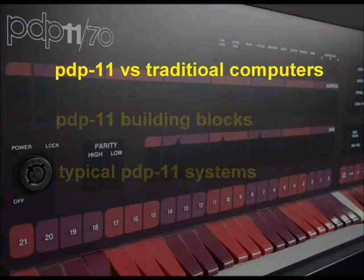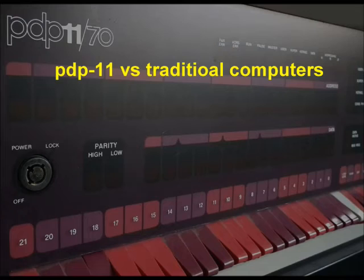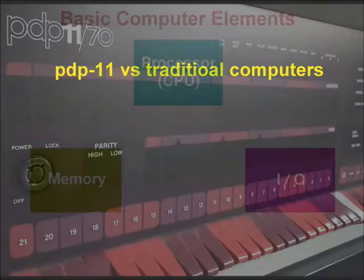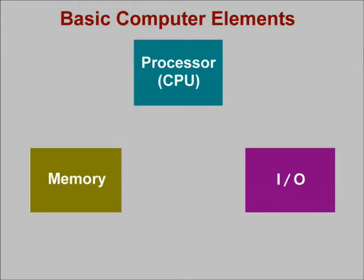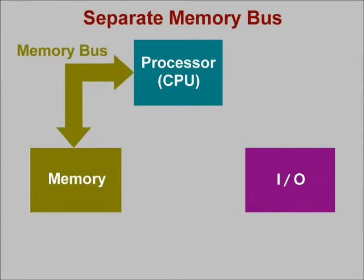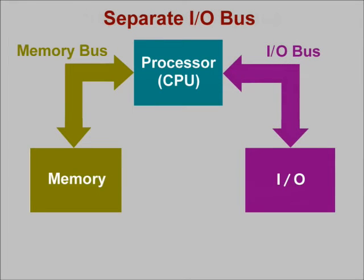Let's begin by comparing the PDP-11 with a more traditional computer system. Any computer can be divided into three main functional elements, just as we've done here. A traditional computer has one path, or bus, that connects the processor to memory and is called, naturally, the memory bus. A second bus connects the processor to one or more input-output devices and is called the I/O bus.